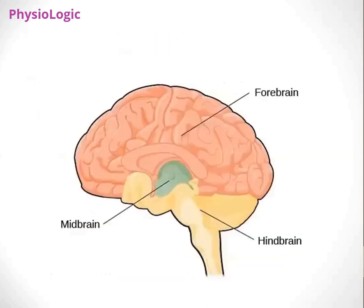You can see it in the image. There is forebrain at the top, beneath the forebrain is the midbrain, and at the end is the hindbrain, and below the hindbrain is your spinal cord. The midbrain is kind of the center, and the hindbrain is the connection of the spinal cord.